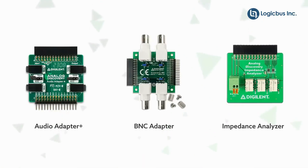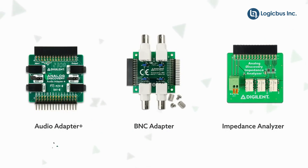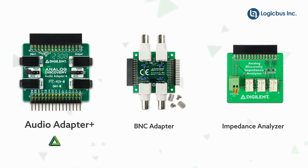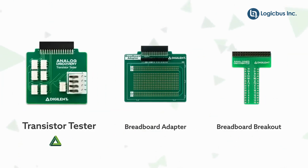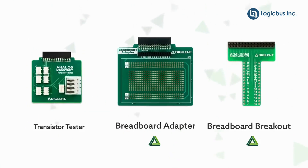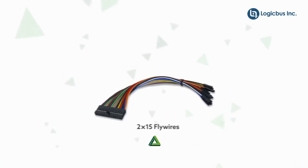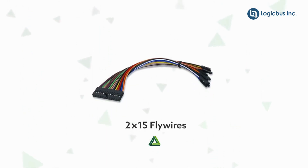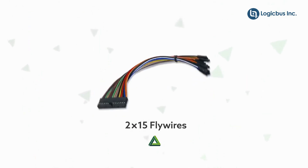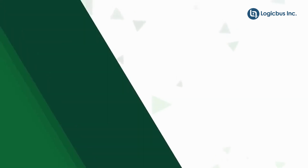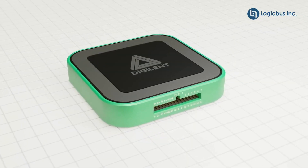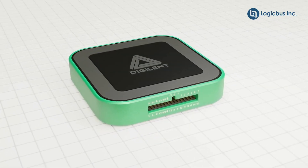The AD3 can be used with a wide range of accessories for convenient connectivity, including the audio adapter, BNC adapter, impedance analyzer, transistor tester, and breadboard adapters. Or you can use the included 2x15 flywire cable assembly to connect to nearly anything. Discover more with Digilent's Analog Discovery 3.